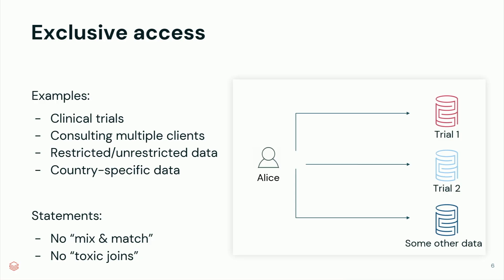Also in the consulting industry, some of our customers have solutions where they work with data from multiple clients. So a consultant may be working on data of Coca-Cola, but then they're also consulting Pepsi. And of course, they shouldn't be able to mix those two datasets while still being able to access them. Then in regulated industries, there are restricted and unrestricted datasets, and in some circumstances users working with unrestricted data should also be able to access restricted data — but without doing toxic joins across those two.